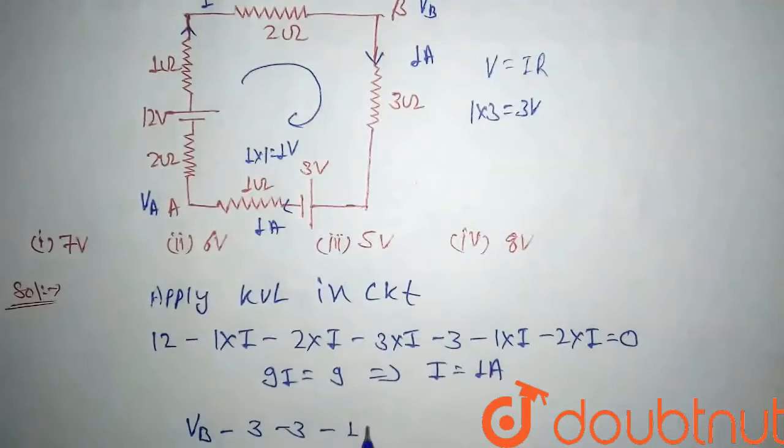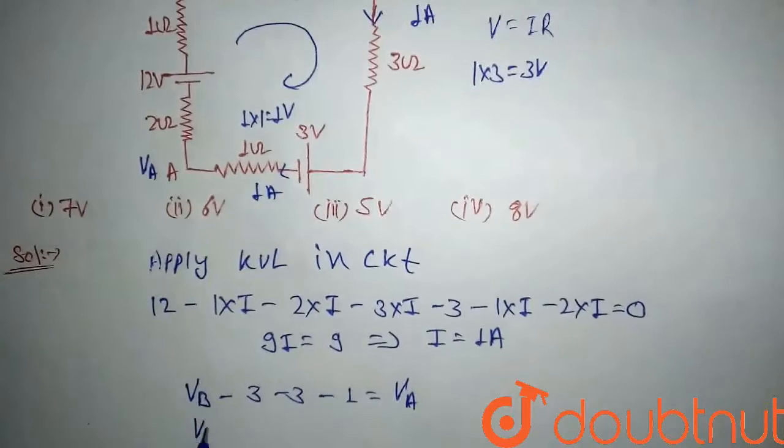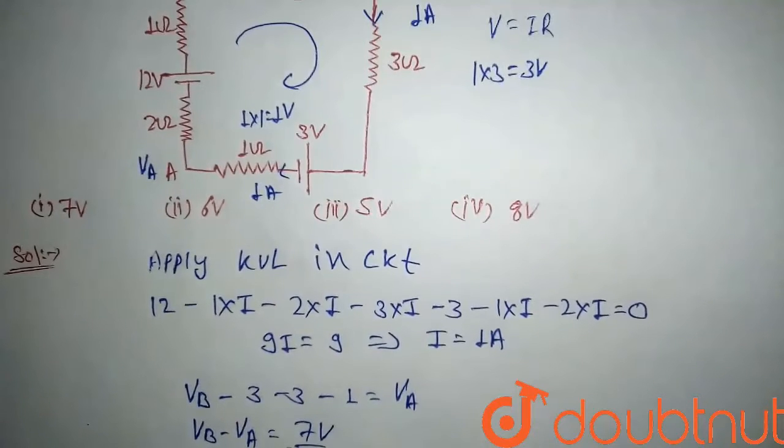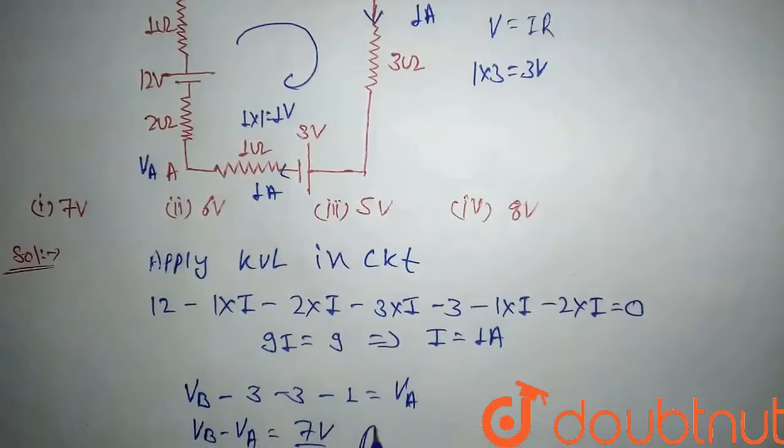So from here, after solving it, we will get Vb minus Va equals to, comes out 7 volt. So the potential difference Vb minus Va comes out 7 volts. So this will be our final answer and our option will be first option.